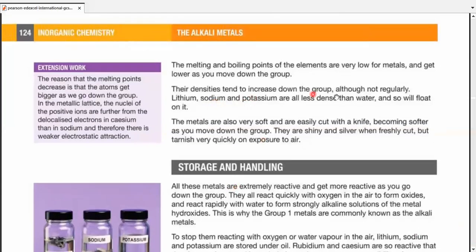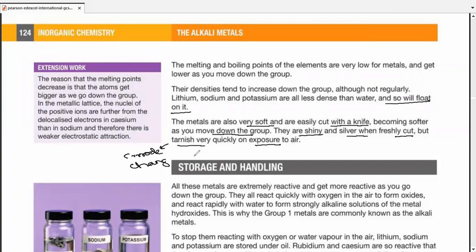Density has to increase, but that's not regular, and sodium and potassium are less dense than water, so they will float on it. These metals are very soft. By soft, I mean they can be cut with a knife and get softer as you move down the group. They're shiny, silver-gray in appearance when freshly cut, but they tarnish very quickly upon exposure to air. Tarnish means they're going to corrode and change color. Their silver-gray appearance turns to dark gray or gray-black as soon as they tarnish, and that's because of their reaction to oxygen.